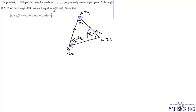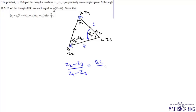We write the rotation formula for two sides, rotating in the anti-clockwise direction with final over initial: z2 minus z3 upon z1 minus z3 equals BC upon AC times e to the power iota times pi by 2 minus alpha by 2. This is our first result.